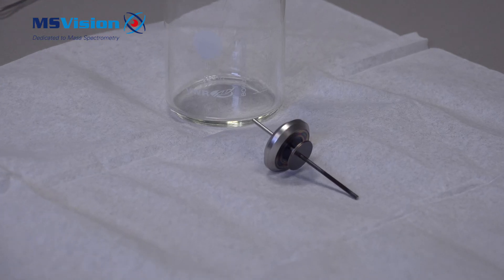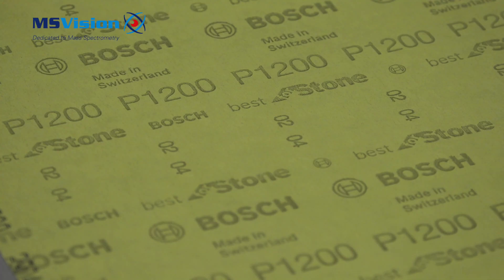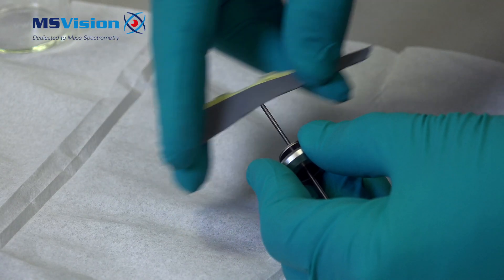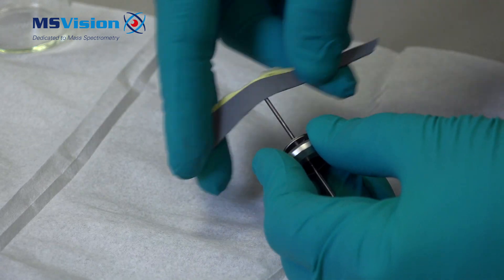You can use ultra-fine P1200 grit paper to help clean the filament. Clean evenly and only take the surface contamination from the pin.